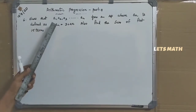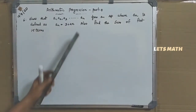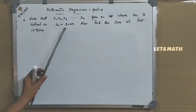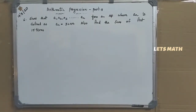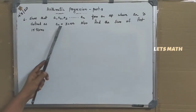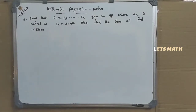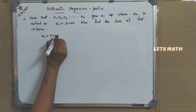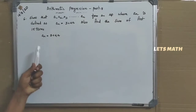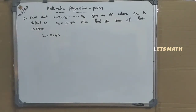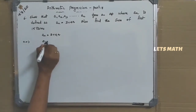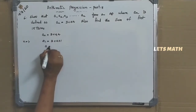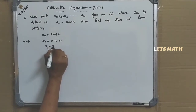Next: show that A1, A2, A3 etc. form an AP where AN is defined as AN equal to 3 plus 4N. Also find the sum of first 15 terms. Putting N equal to 1: A1 equal to 3 plus 4 equal to 7. For N equal to 2: A2 equal to 3 plus 8 equal to 11.